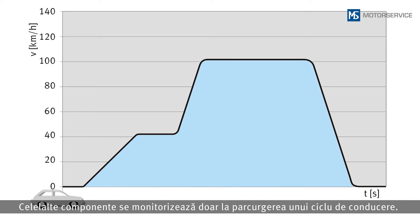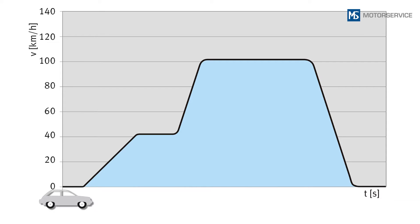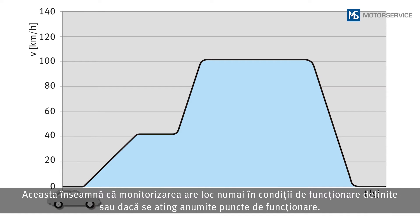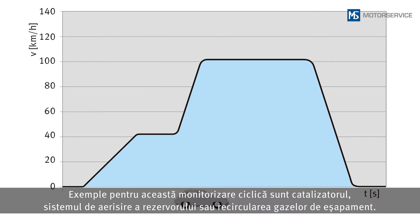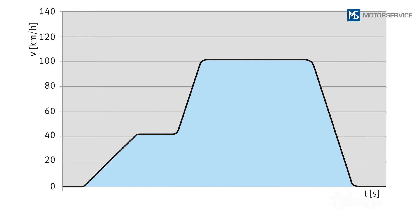Other components are only monitored when passing through a driving cycle — in other words, under specific operating conditions or if certain operating points have been reached. Examples of this cyclical monitoring include the catalytic converter, the fuel tank ventilation system, or exhaust gas recirculation.